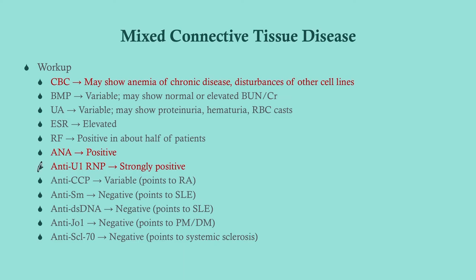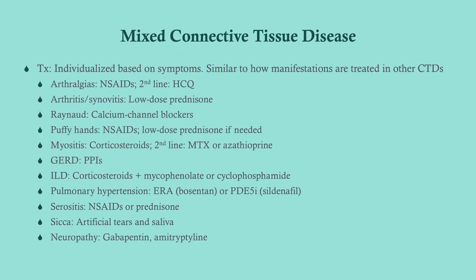The big one is anti-U1 ribonucleoprotein - it is most specific for MCTD. Treatment is individualized based on symptoms. If all of this looks overwhelming, it's not that bad - go back and watch the other videos, because we are treating each of these symptoms the same way you would treat them in lupus, RA, Sjogren's, or other connective tissue disorders. If you know how to treat those, you'll know how to treat MCTD. There's no silver bullet - we just treat it symptomatically.